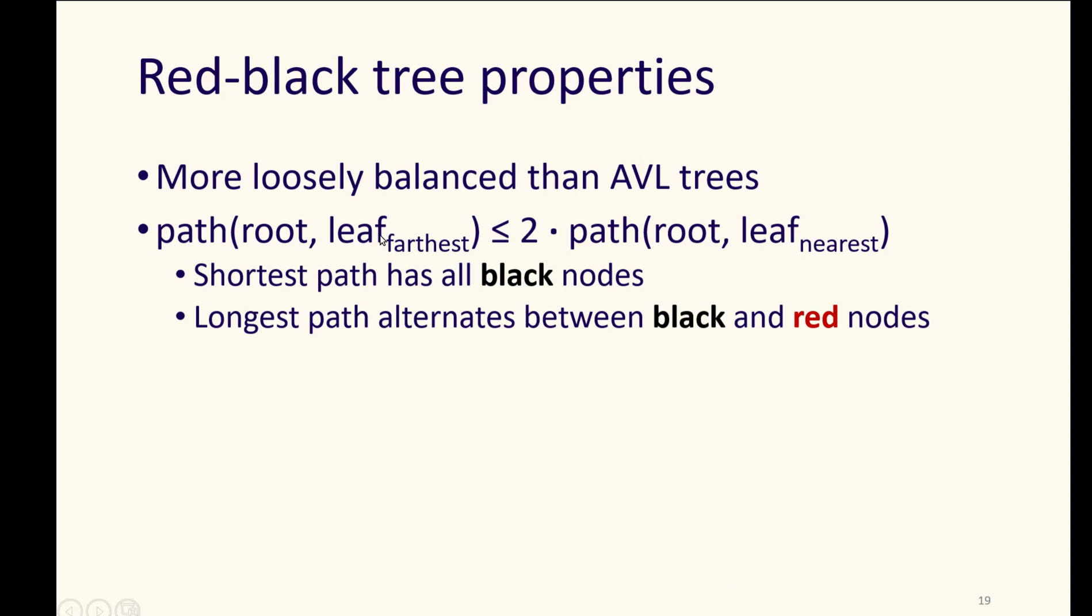So that means the shortest possible path will be along all black nodes, and the longest path alternates equally between black and red nodes. But that alternation again will at most double our length there to get to a leaf node from the root.